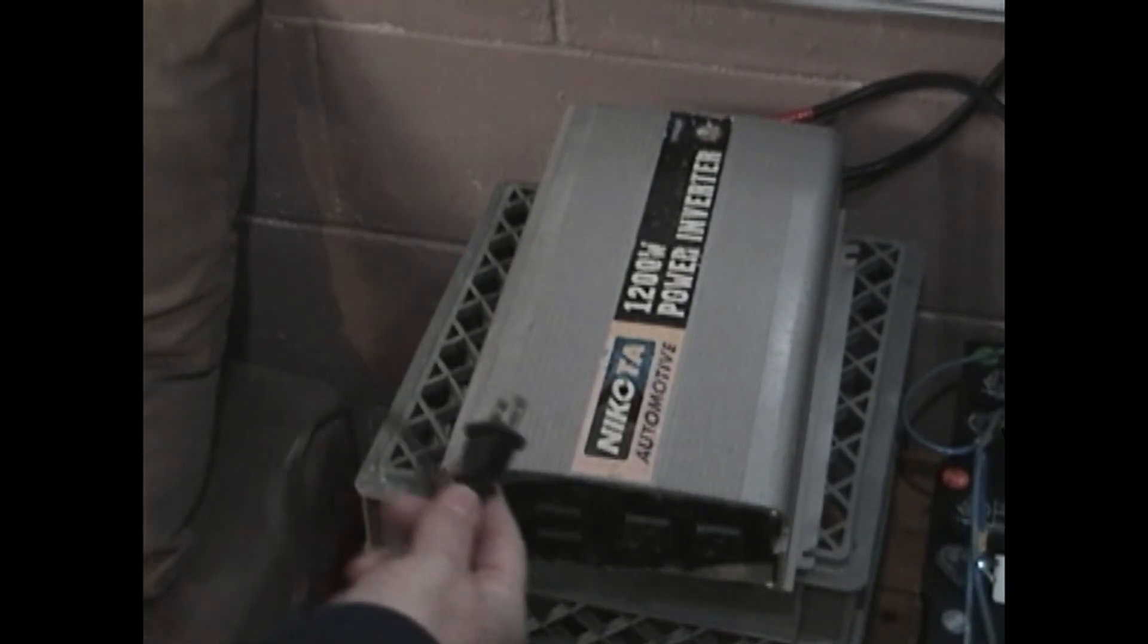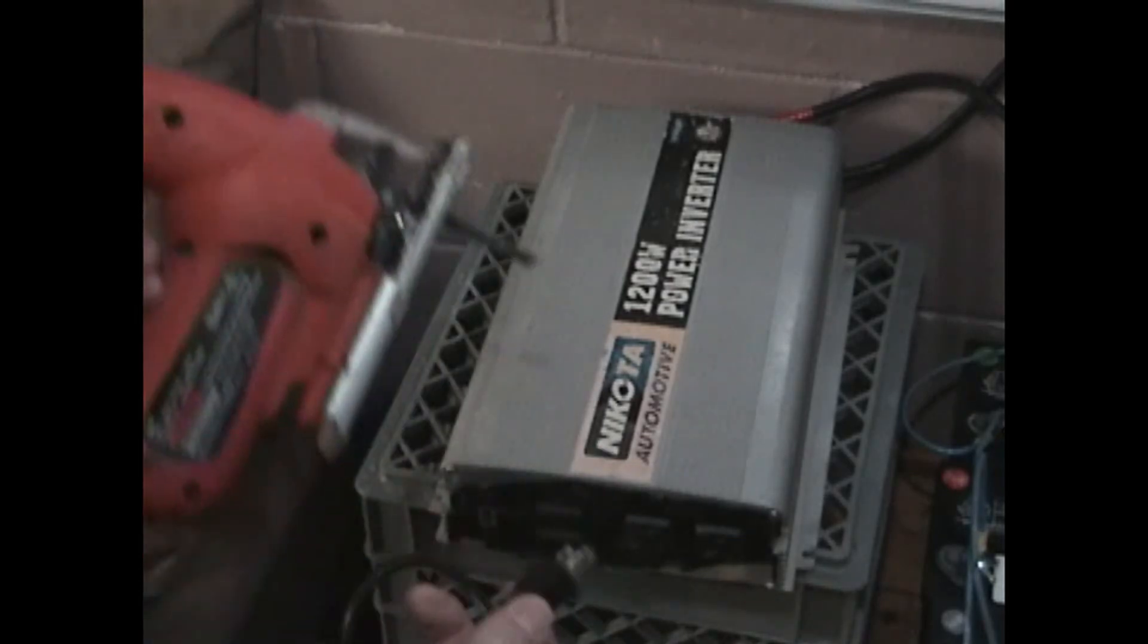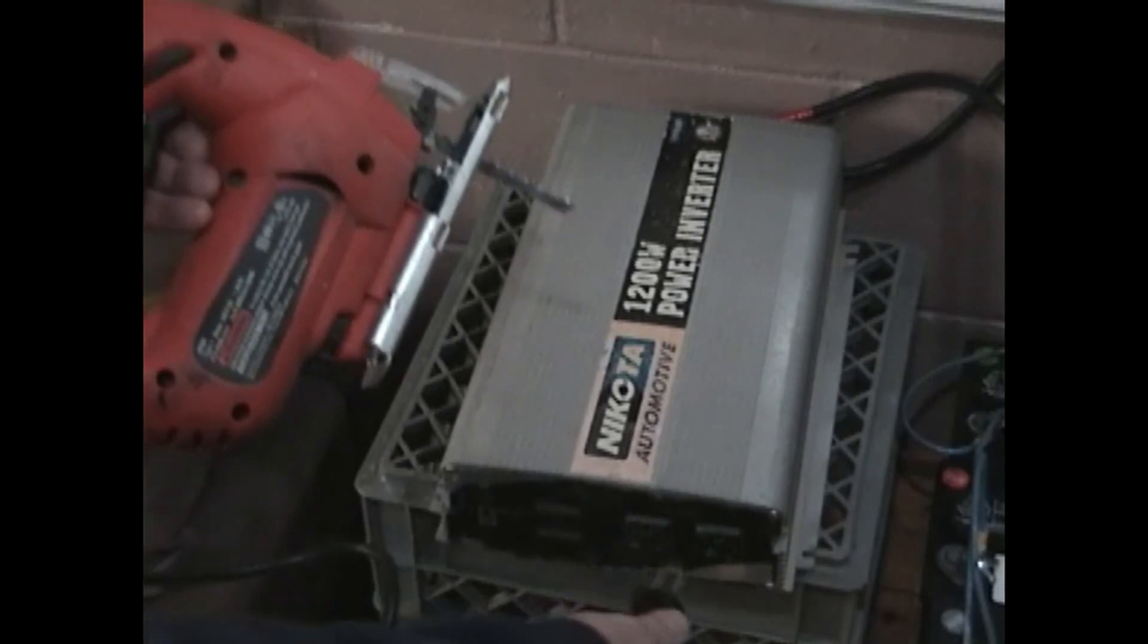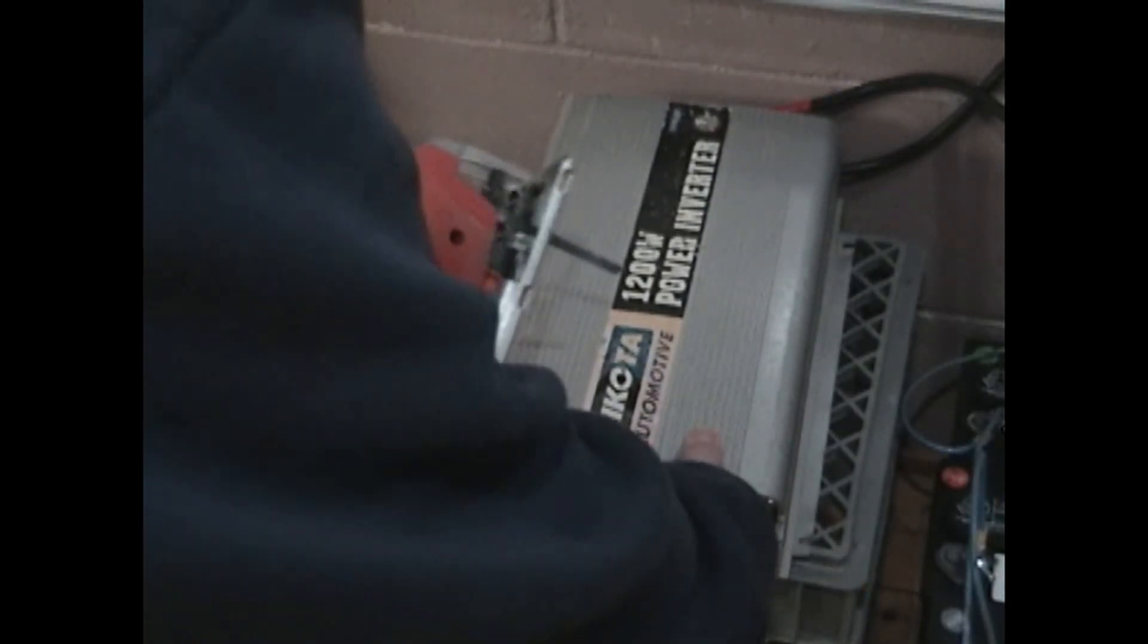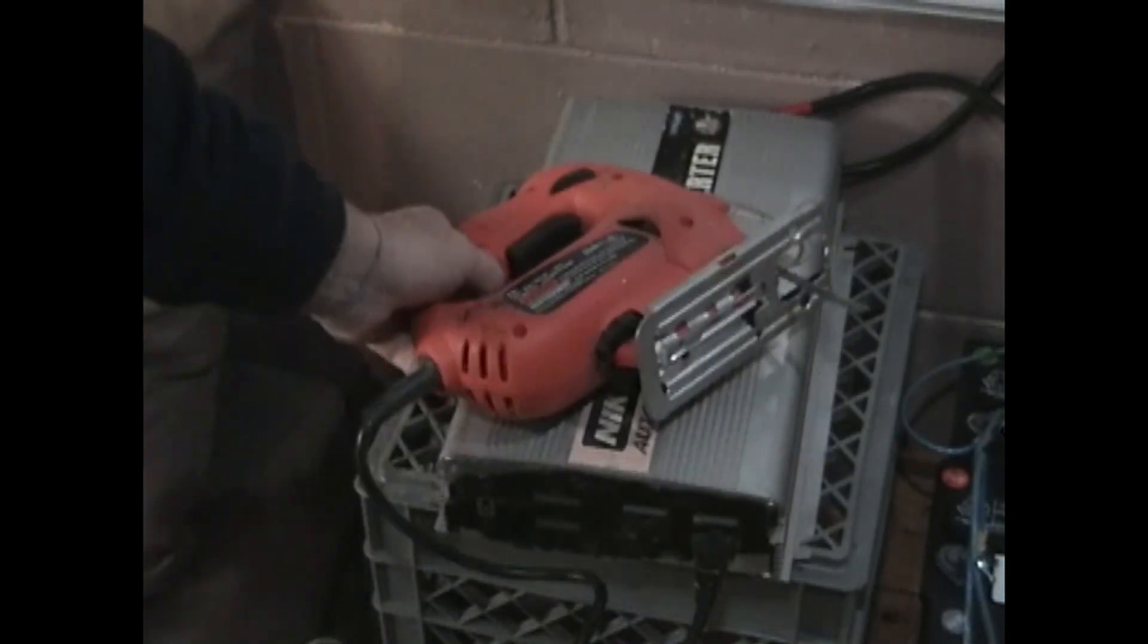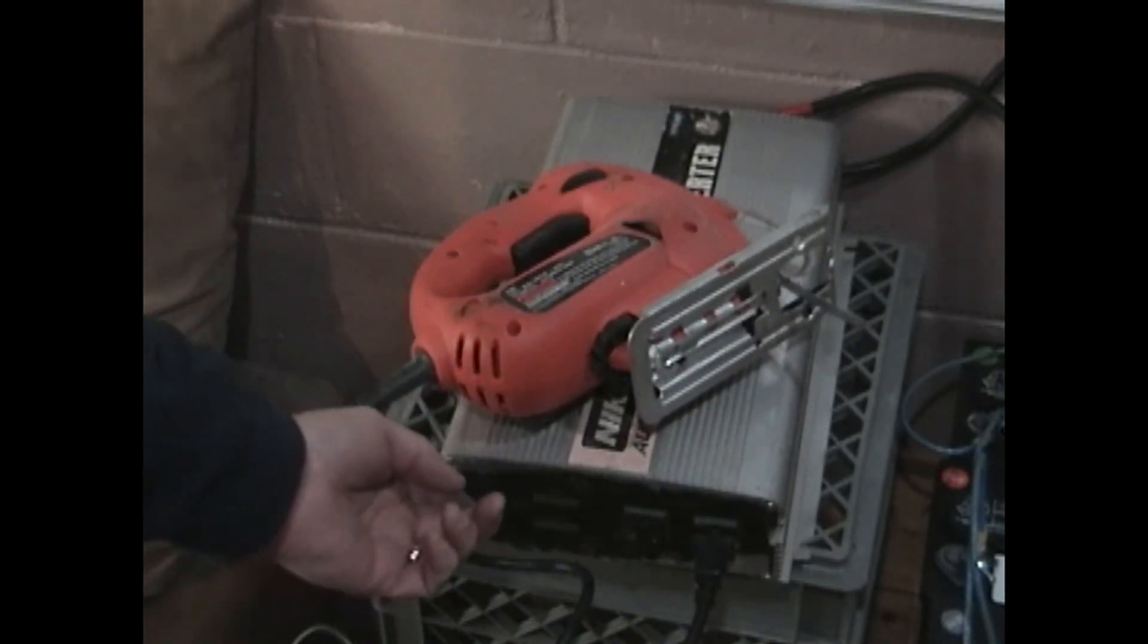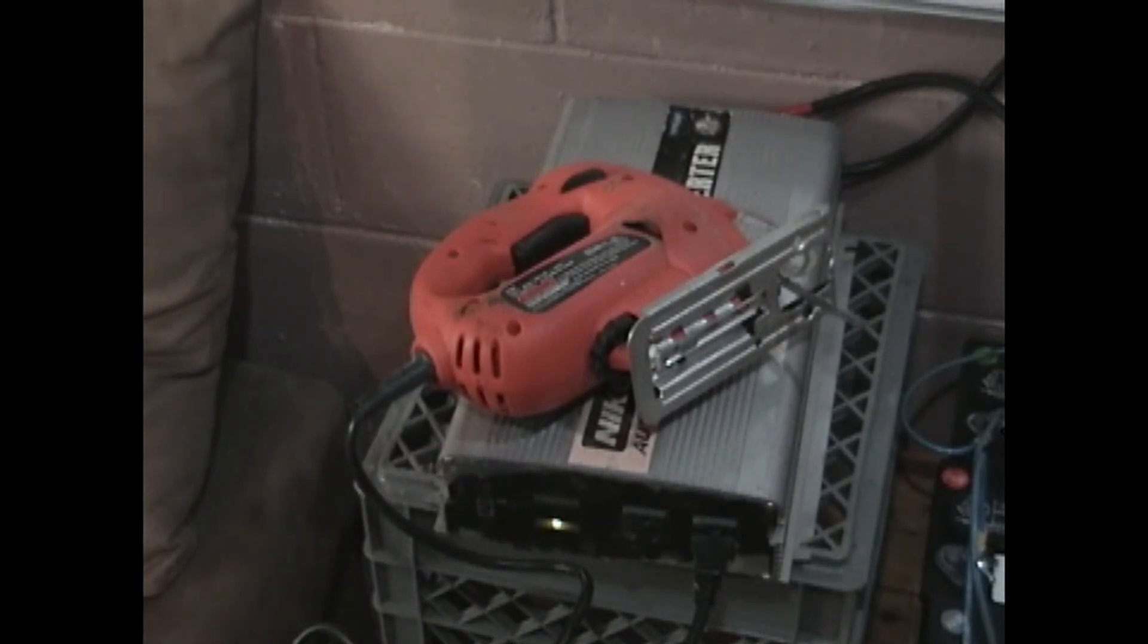We are using a 1200 watt power inverter. It goes to 120 volts AC. And you're going to see how much current is drawn from a jigsaw. Pretty simple. The inverter is hooked up to the batteries, 12 volts coming into it. And when you flip the switch, it draws a little bit of current for the inverter itself. And we're going to use that jigsaw. Let's see what happens.